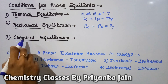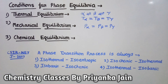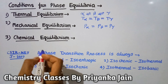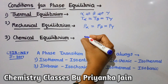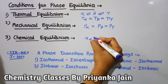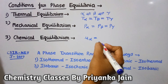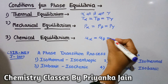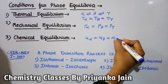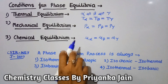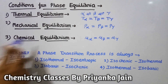The third criterion is chemical equilibrium: if all phases are in equilibrium, then the chemical potential of all components in all phases must be equal — μ_α = μ_β = μ_γ. For any component present in all phases, its chemical potential must be the same in each phase.